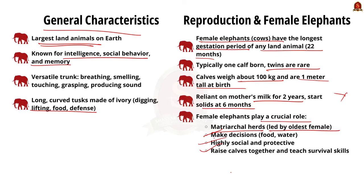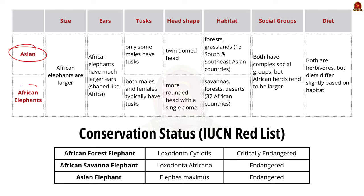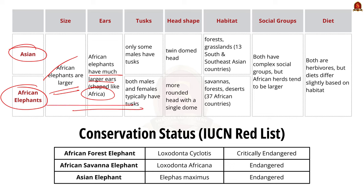There are two main types of elephant species: Asian elephant and African elephant. Key differences include: First, size — African elephants are generally larger than their Asian counterparts. Second, ears — African elephants have much larger ears, shaped like the African continent. Third, tusks — both male and female African elephants typically have tusks, whereas in Asian elephants only some males have tusks. Fourth, head shape — African elephants have a more rounded head with a single dome, while Asian elephants have a twin-domed head. Fifth, habitat — African elephants are found in savannas, forests, and deserts across 37 countries in Africa, whereas Asian elephants are found in forests and grasslands in 13 countries across South and Southeast Asia. Both species live in complex social groups, but African elephants tend to form larger herds, and both are herbivores though their diets differ slightly based on habitat.